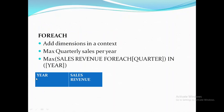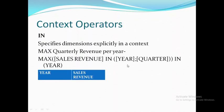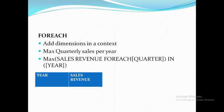The second operator is FOR EACH. FOR EACH actually considers the default dimensions of your block. For example, if I have Year and Sales Revenue in my block, Year is already included in the calculation by default. So I only need to specify Quarter additionally, because I want quarterly sales per year. The result of this FOR EACH example and the IN example are the same, but with FOR EACH I didn't need to explicitly define Year since it was already included from the block dimension.